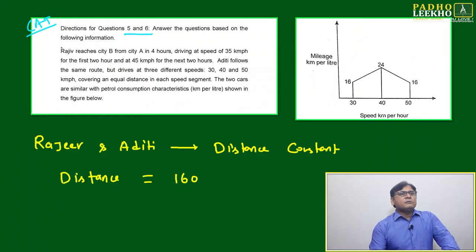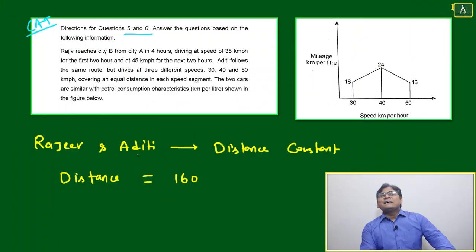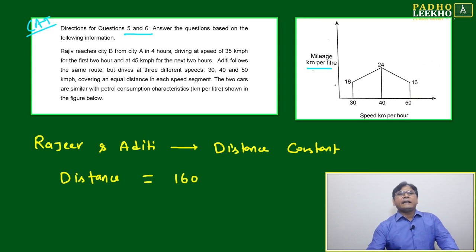Now we'll come to the next question, question number five and six. That is again a previous year CAT paper. A good question here. Again, it is given mileage in kilometer per liter and speed in kilometer per hour. Both are inversely proportional.